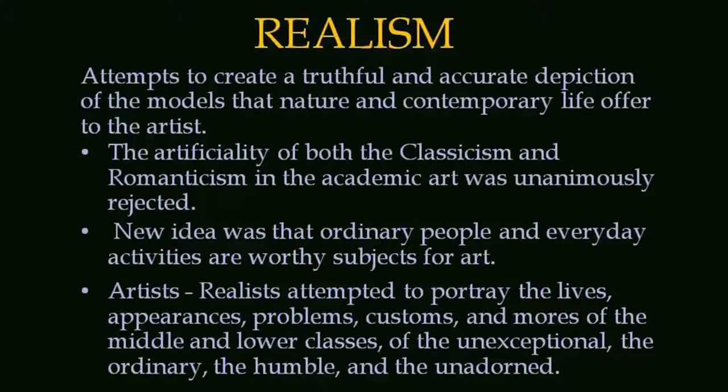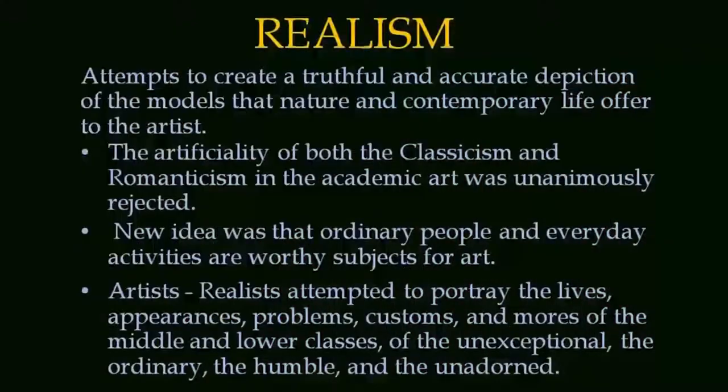Realism attempts to create a truthful and accurate depiction of the models that nature and contemporary life offer to artists. There is the element of reality, but unlike the previous classical reality — which was based on a preconceived model — in this art movement of mid-19th century called Realism, artists are looking at how a particular figure or object appears right now. The artificiality of both classicism and Romanticism in academic art was unanimously rejected by the Realist painters. The new idea was that ordinary people and everyday activities are worthy subjects for art.